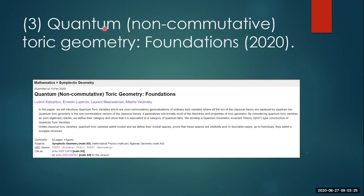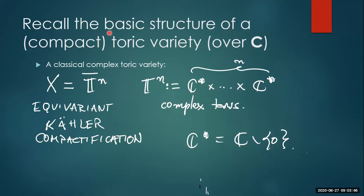Today I will assume some passing familiarity with classical toric geometry, as quantum toric geometry is a generalization of classical toric geometry. So let's recall some basic facts of classical toric geometry. Here we have some basic structure of a compact toric variety over the complex numbers. I will always be working over the complex numbers.